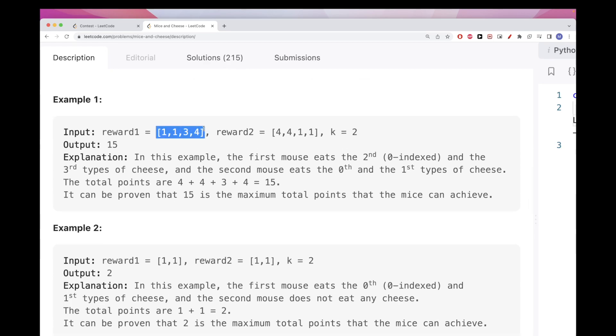If we take a look at the first example here, this is reward for mouse 1, this one for mouse 2, and mouse 1 has to eat exactly two cheeses. So let's say, for example, the first mouse eats the second one at index 2. So that would mean it will eat with reward 3, and then 4, at index 3 as well. So 3 and 4 for mouse 1, and that's exactly 2 for this K value. And then for mouse 2, it's more optimal for it to eat the bigger reward values, so 4 and 4. So overall, we have 4 plus 4 plus 3 plus 4, and that's 15. And this is the maximum because we've eaten the cheeses with the highest values.